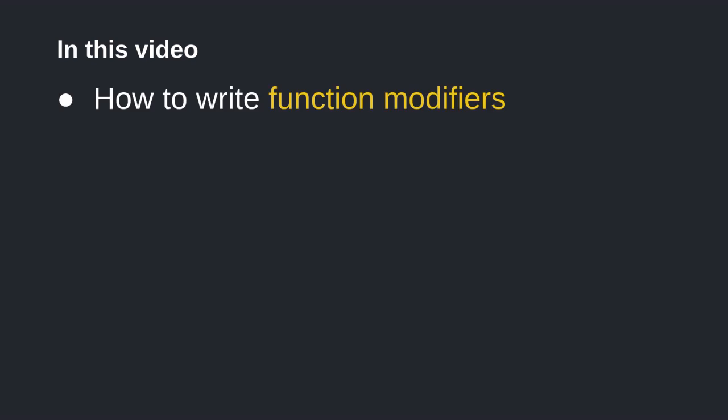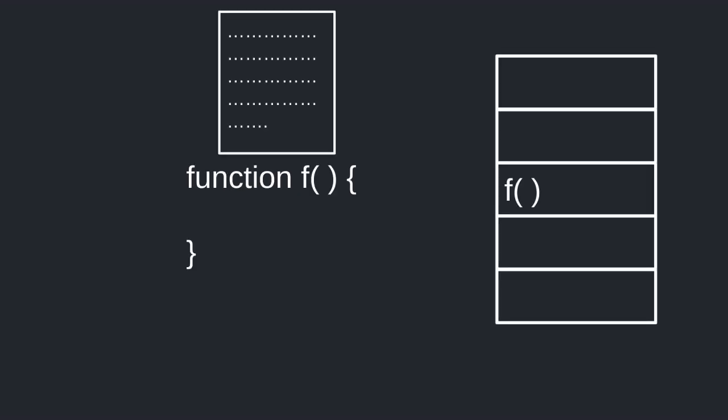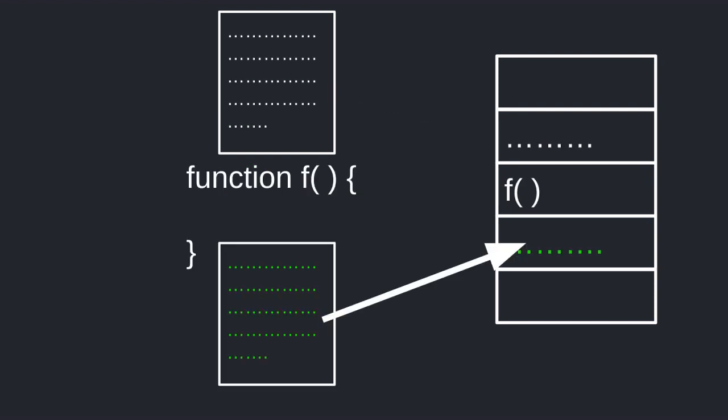What are function modifiers? In this video I'm going to explain what function modifiers are, show you how to write a function modifier, and explain why they are useful. Function modifiers are reusable code that can be attached to a function. This reusable code can be executed before and/or after the function is executed.